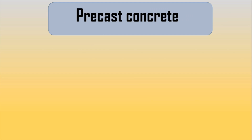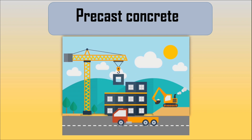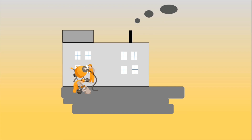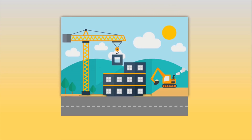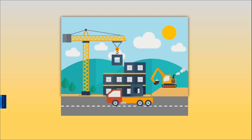Precast Concrete is a construction product produced by casting concrete in a reusable mold or form, which is then cured in a controlled environment, transported to the construction site, and lifted into place. In contrast, cast-in-place concrete is poured into site-specific forms and cured on site. By producing precast concrete in a controlled environment, typically referred to as a precast plant, the concrete is afforded the opportunity to properly cure and be closely monitored by plant employees.